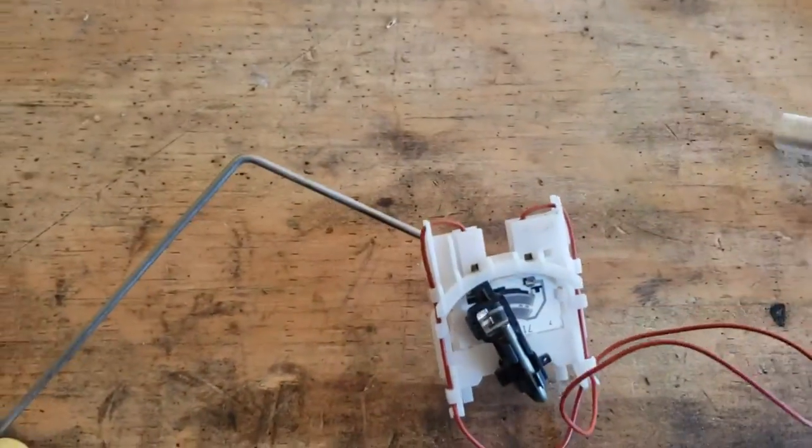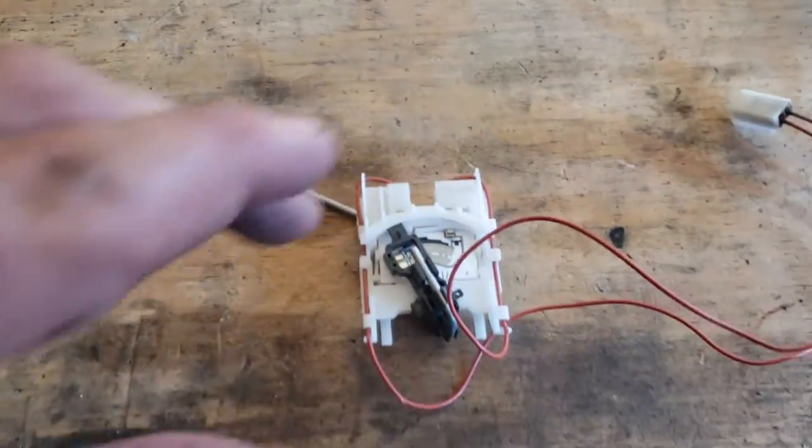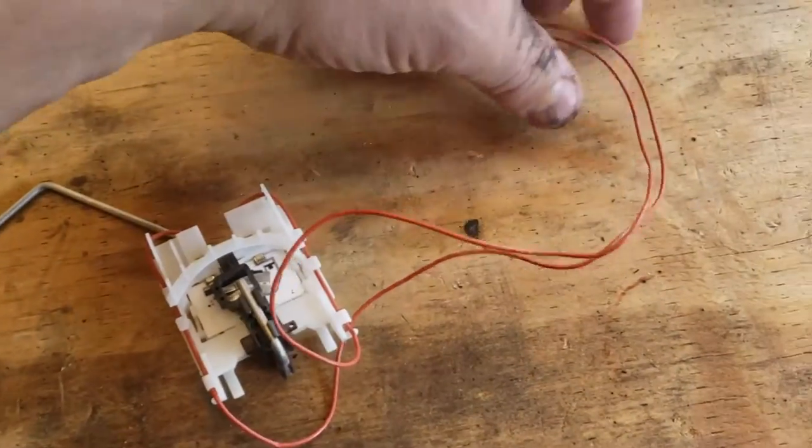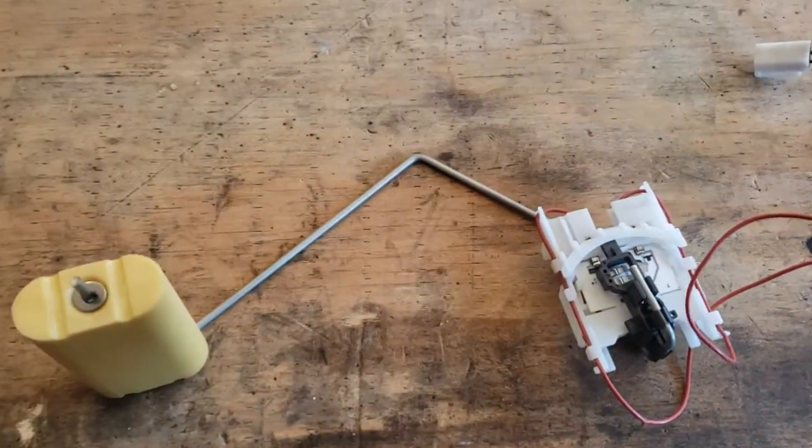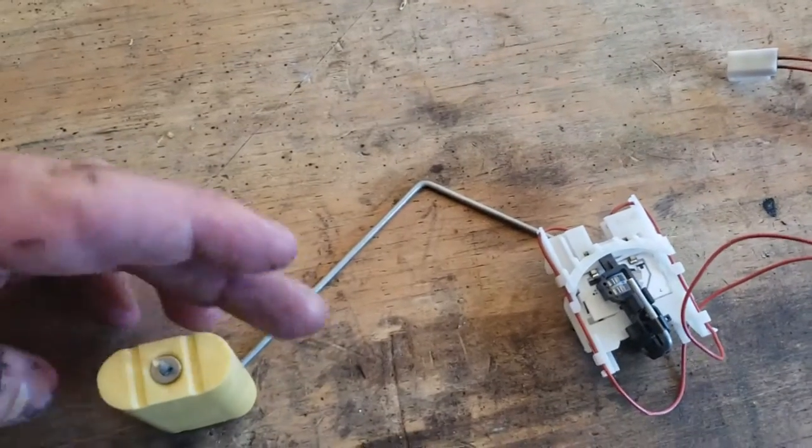If you put a voltmeter on it or test the resistance, it seems to change okay as the range of the fuel goes up and down. So I get varying ohm readings. There doesn't seem to be anything wrong with the sensor itself. So what I figured out was the problem is this right here - it doesn't spin freely on this post.